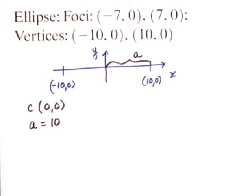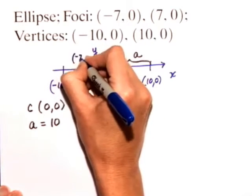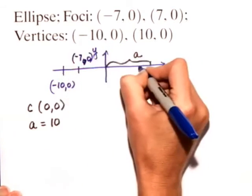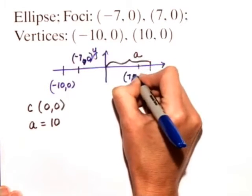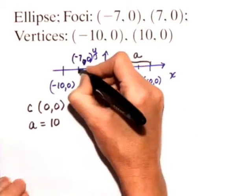We also know that any time we have a focus, it's located c units from the center, also along the major axis. So we have (-7, 0) and (7, 0). We have a focus located at each one.